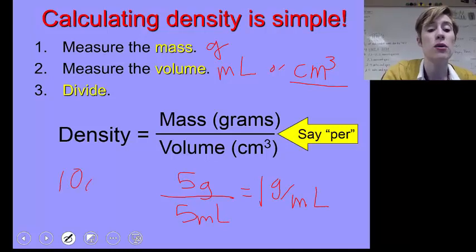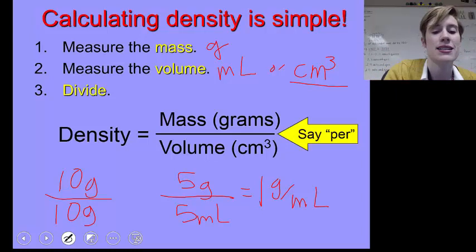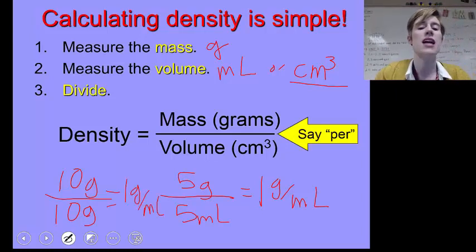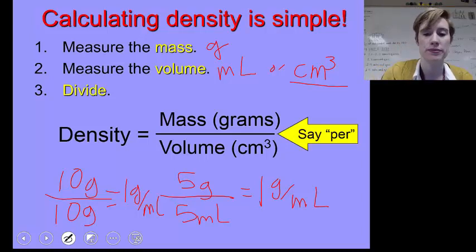Because if I have an object that weighs 5 grams and it takes up 5 milliliters, well, the density is obviously 1 gram per milliliter, right? Well, what happens if I double the mass and double the volume? You would think, probably normally, you would normally think that density would be greater. Well, it's not. 10 divided by 10 is still 1 gram per milliliter. So density is not how much mass and how much volume. It's how much mass per unit of volume. That's super important.